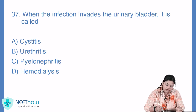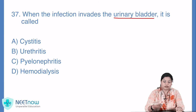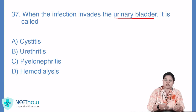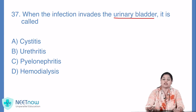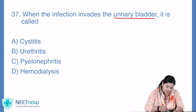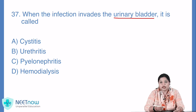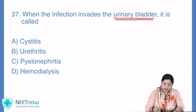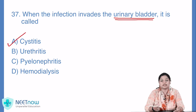Question number 37: when the infection invades the urinary bladder, it is called — yaani ki jab infection urinary bladder tak pahunch jaata hai, tab usko kya kaha jaata hai? Options: cystitis, urethritis, pyelonephritis, ya hemodialysis. Kabhi infection ho aur woh urinary bladder tak aa jaaye, toh usko hum kehte hain option A — cystitis.